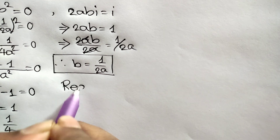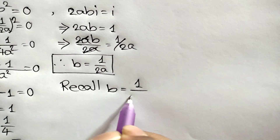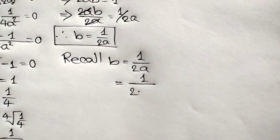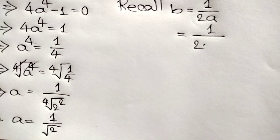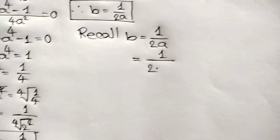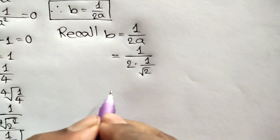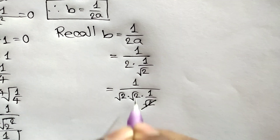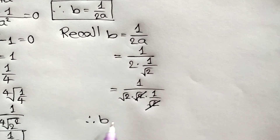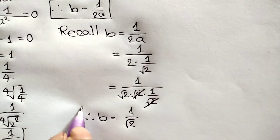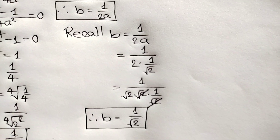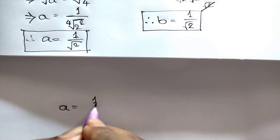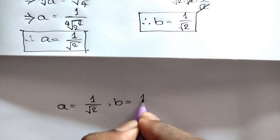Recalling b equals one over two a, and substituting a equals one over square root of two: b equals one over two times one over square root of two. We can write two as square root of two times square root of two, and the square root of two cancels, giving b equals one over square root of two. So a equals one over square root of two and b equals one over square root of two.